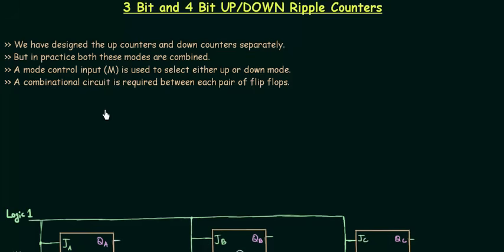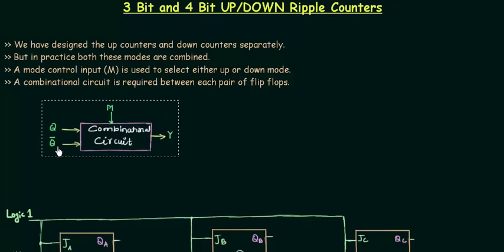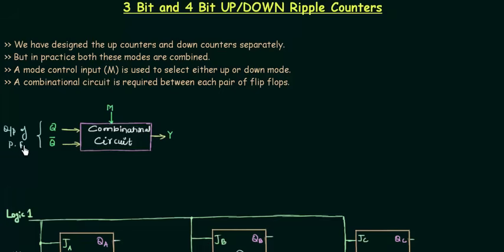We have to design a combinational circuit in which the inputs are Q, Q complement, and M. M is the mode control input. Q and Q complement are the outputs of the previous flip-flop, and Y, the output of this combinational circuit, is given to the next flip-flop. We need to find this combinational circuit, then insert it between pairs of flip-flops. I will make a truth table for this purpose.